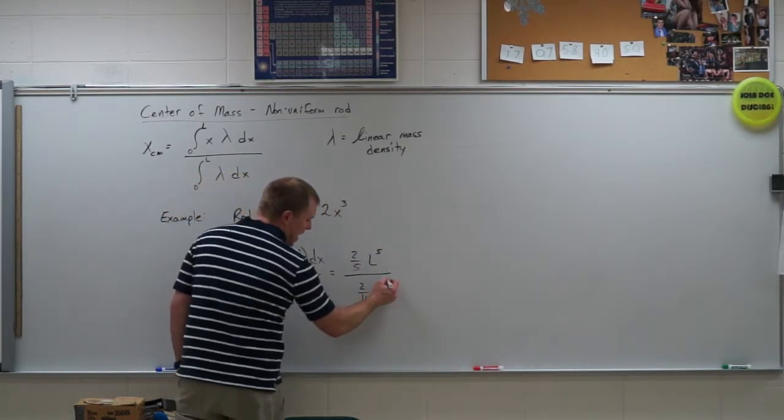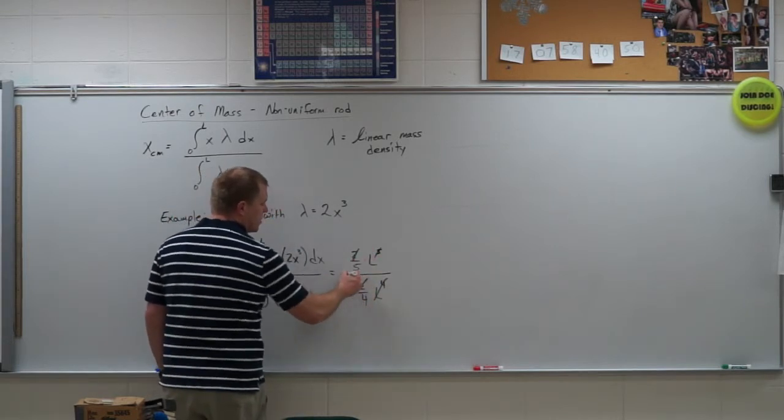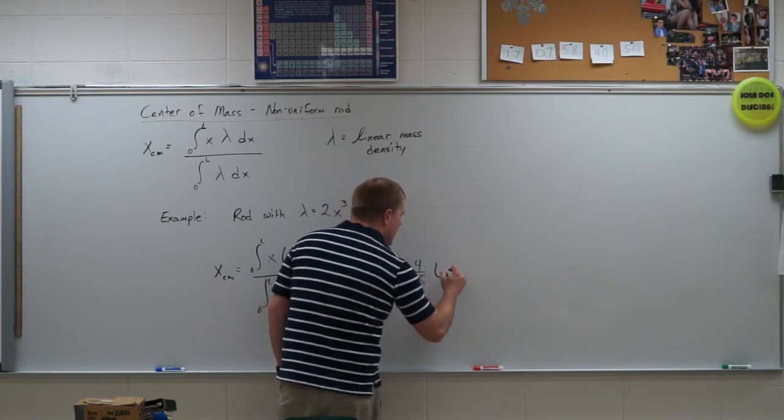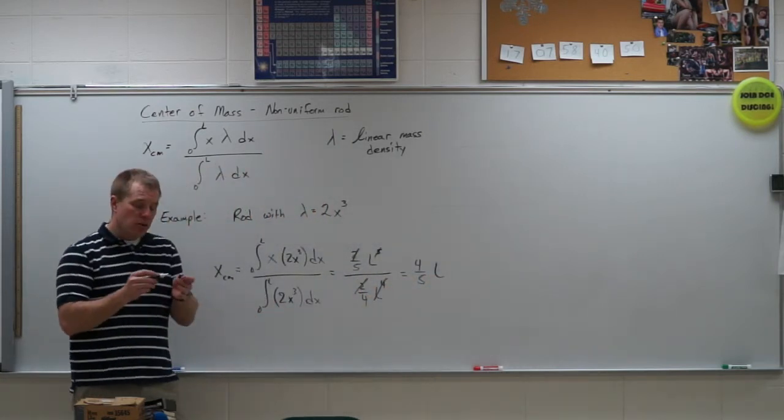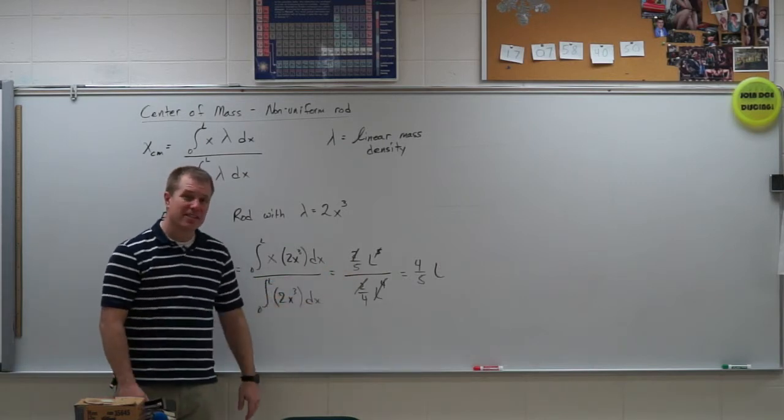You'll notice we get some things to cancel. L to the 4th gets rid of those four. I've got a 2 and a 2, so I'm left with 4/5 L. So, at 80%, the length of the rod is the location of the center of mass of that rod, regardless of its length.